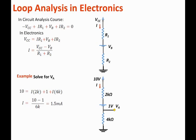Once we solve for the current, now we can solve for VA, which is basically the same as the voltage across the 4kΩ. So VA is equal to I times 4k, which is equal to 1.5 mA times 4k, that is 6V.